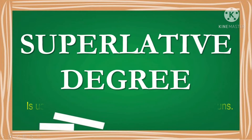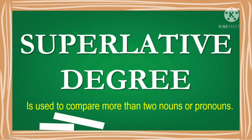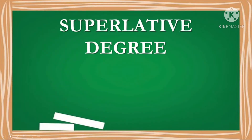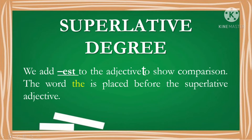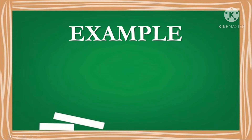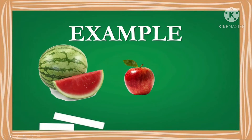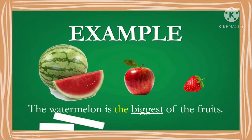Next, superlative degree — it is used to compare more than two nouns or pronouns. We add -est to the adjective to show comparison, and the word 'the' is placed before the superlative adjective. For example, the watermelon is the biggest of the fruits. We added -est to the adjective and placed 'the' before it.